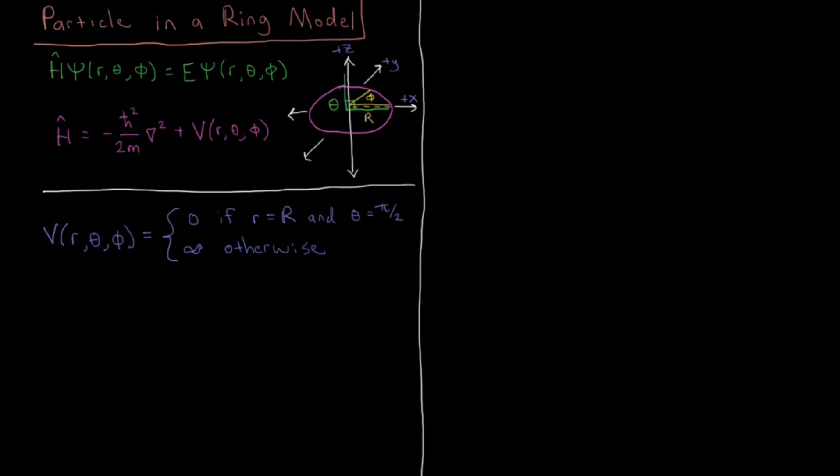So what we can say is, from right off the bat, is that ψ of r, theta, phi equals zero if r is not equal to big R, or theta is not equal to pi over 2. So this really gives us a wave function which is just going to be a wave function in the end of the coordinate phi, the azimuthal angle here, with this fixed polar angle and this fixed radius.